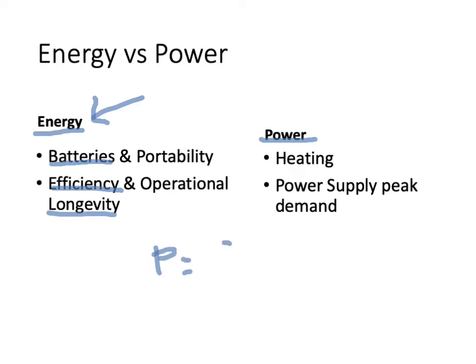So when do we optimise for power? Power is the rate of consumption of energy. For example, if 10 logic operations consume a fixed number of joules, that energy can be consumed within a very short duration of time, or the consumption could be spread out over a long duration. When we talk about power, we are talking about the ability of a power source or computational system to handle large amounts of energy consumed within a short duration. We optimise for power in cases where we are concerned about heating, because consuming a large quantity of energy within a short duration within a small area leads to a quick rise in heating in the circuit.